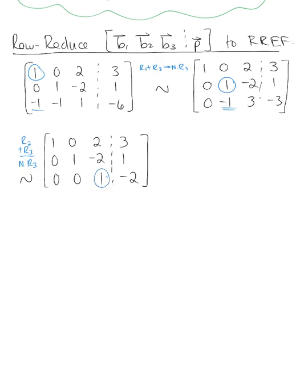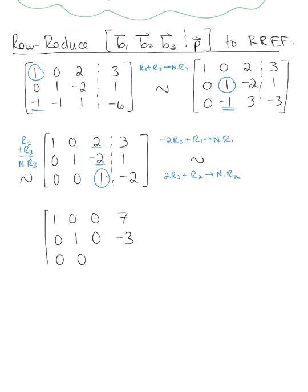We use the third pivot to eliminate the entries above it. We compute -2 times row 3 plus row 1 to get the new row 1, and +2 times row 3 plus row 2 to get the new row 2. This yields: [1, 0, 0 | 7; 0, 1, 0 | -3; 0, 0, 1 | -2].